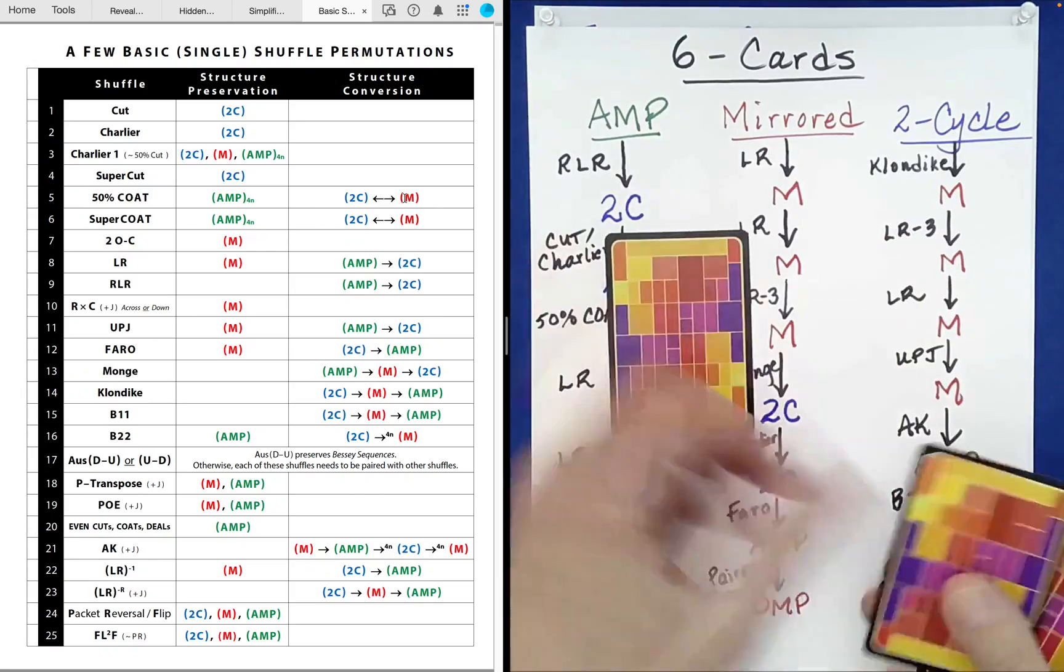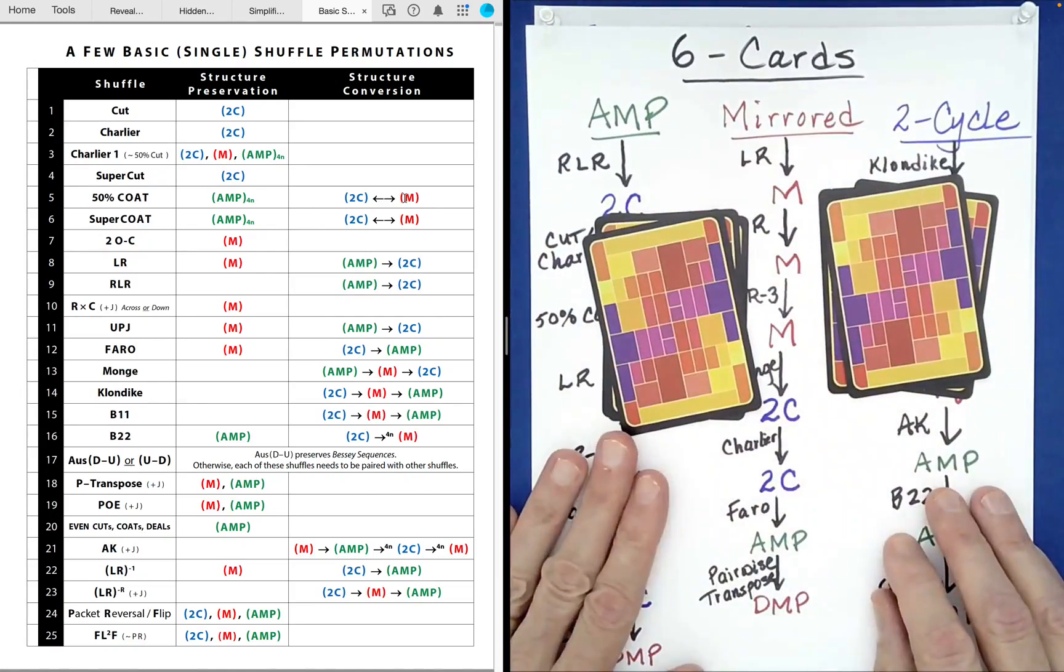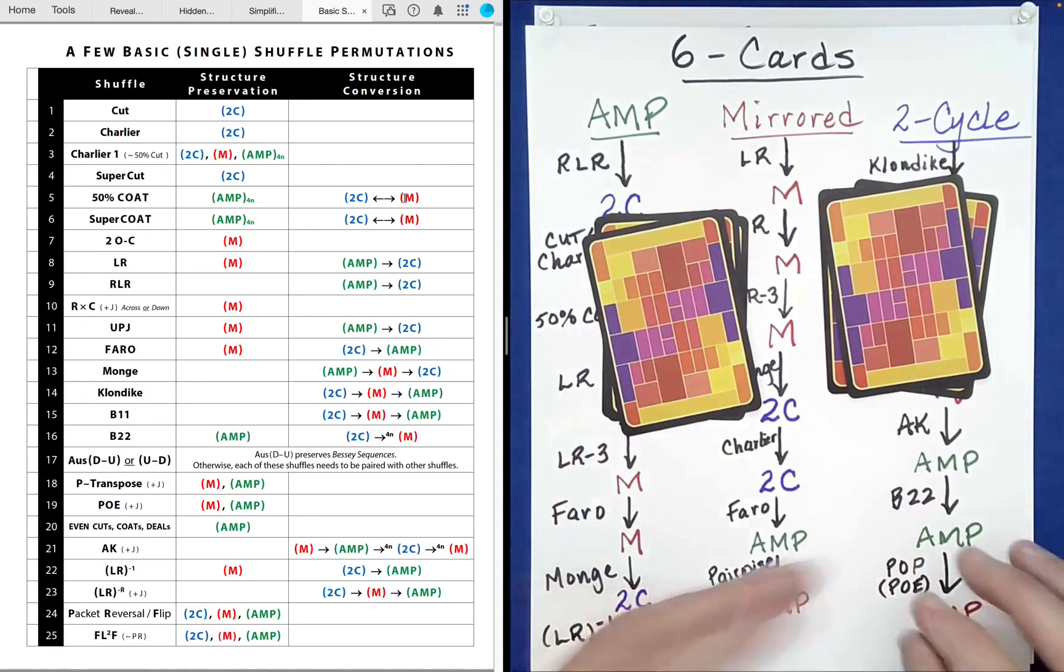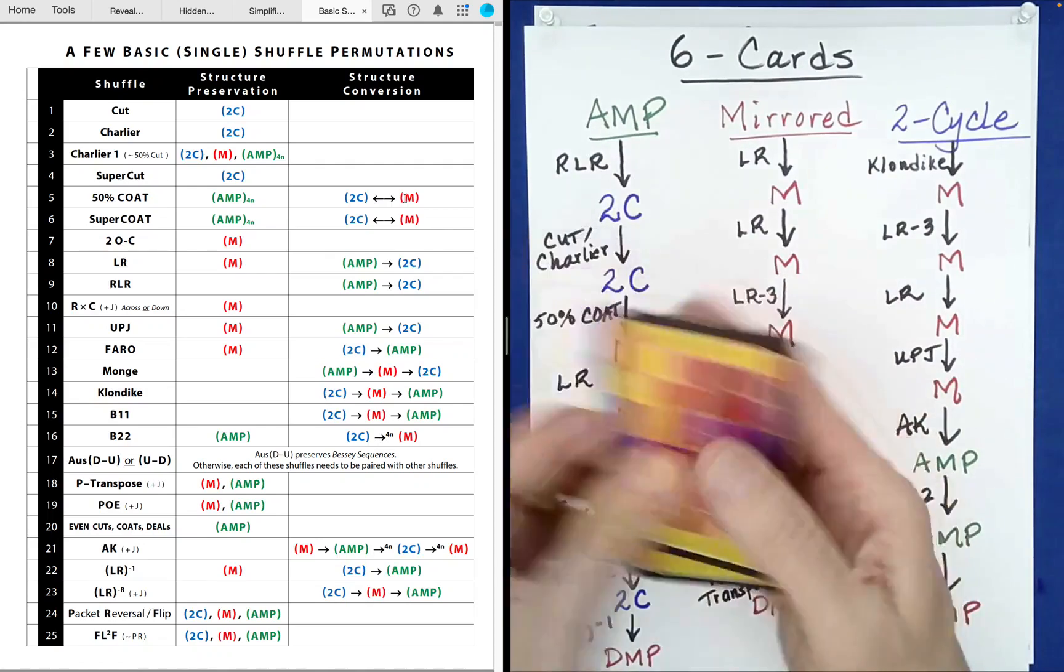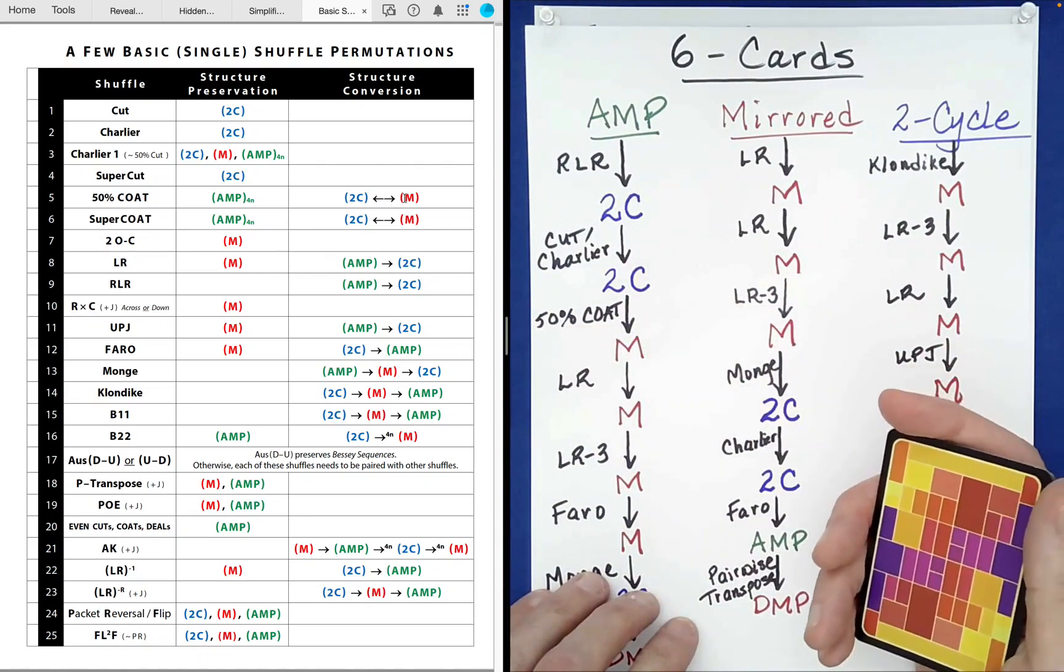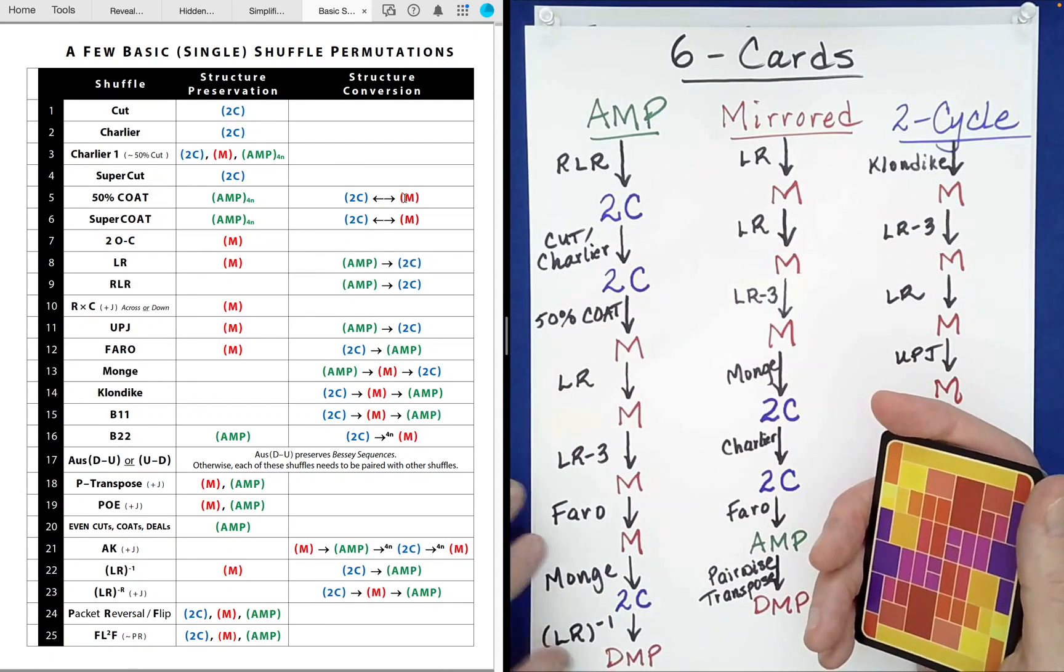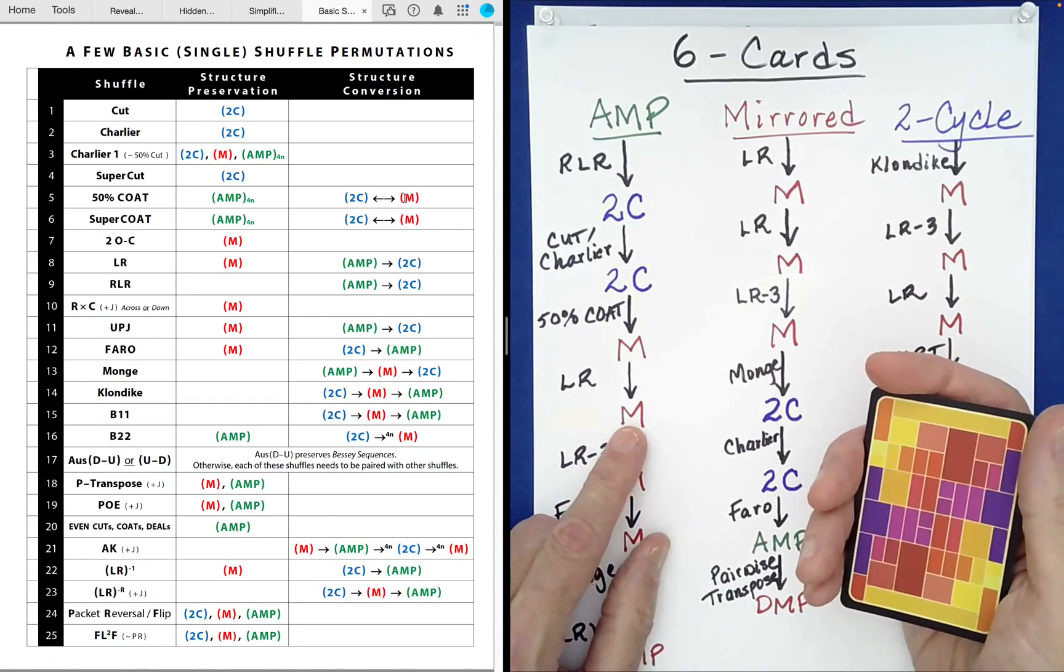So we can do like left, right, left, right, left, right. And then ask the spectator, do you want left on right or right on left? Okay, very good. Now the amazing thing is you can do as many of those LR shuffles as the spectator calls for. You can do one of them or five million of them. None of those will hurt the fact that it's still mirrored.